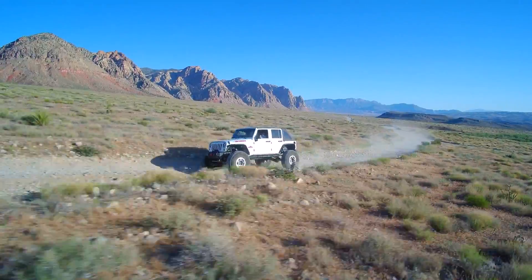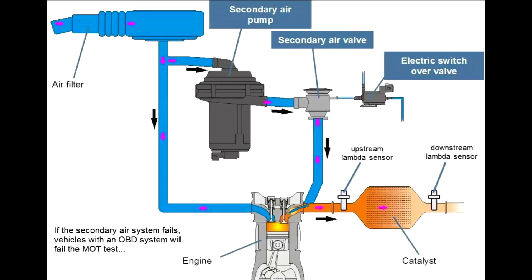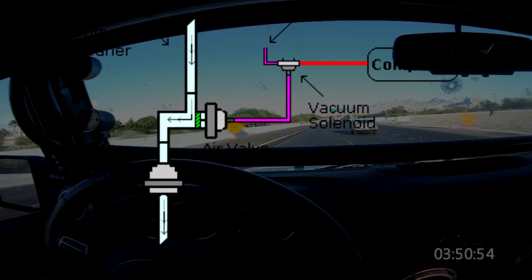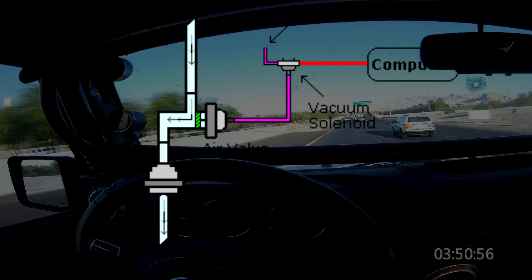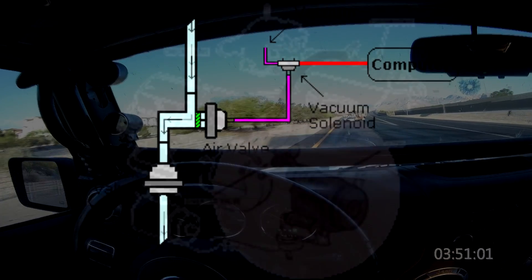You've got to be careful with the secondary air system because while it can do a lot of good, it can also do some harm, because we're putting air into the exhaust and it has to deal with heat. There are two main systems: pulse air and pump air. Pulse air uses the vacuum created from the exhaust stream to pull fresh air in. A pump air system uses a belt-driven or electric pump to force air into the exhaust.